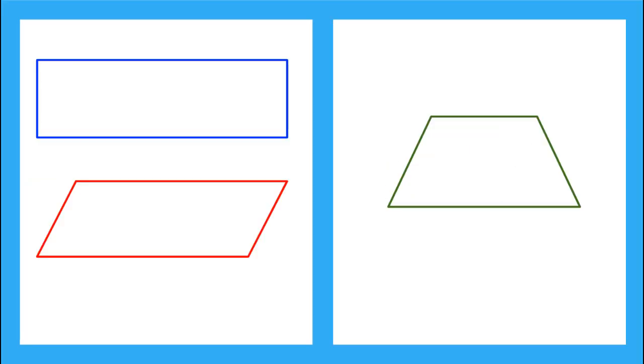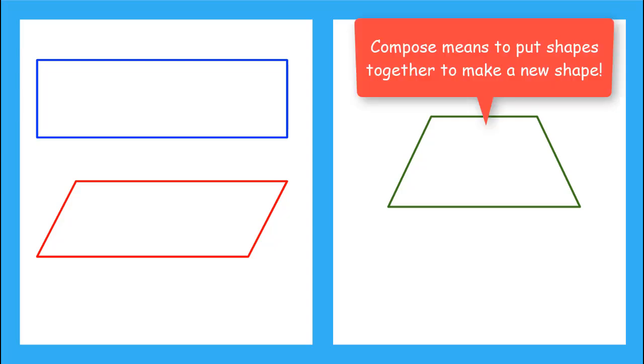And there we have it. Now that we know how to find the area of rectangles and parallelograms, let's look at trapezoids. Now looking at these three shapes, can you think of a way that we can compose or manipulate the trapezoid to calculate its area?